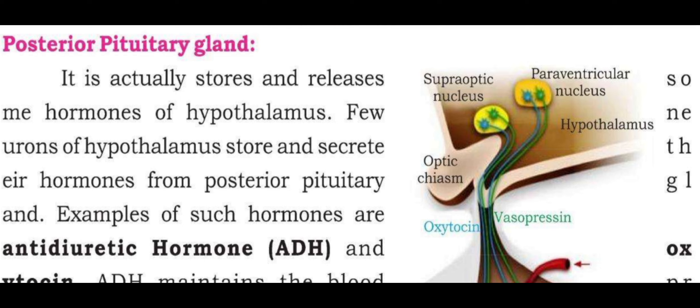The posterior pituitary actually stores and releases many hormones of the hypothalamus. Few neurons of the hypothalamus store and secrete hormones from the posterior pituitary.